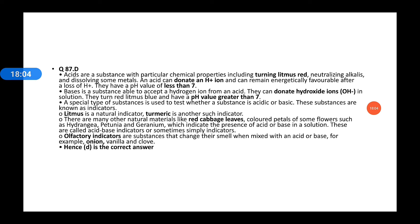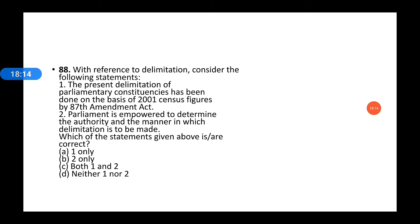These are called acid-base indicators, or sometimes simply indicators. Another type is olfactory indicators — a subset that changes their smell when mixed with an acid or base. Examples include onion, vanilla, and clove — these are olfactory indicators.